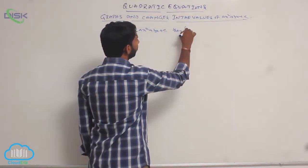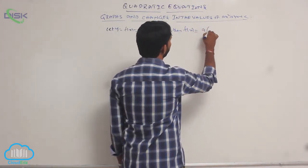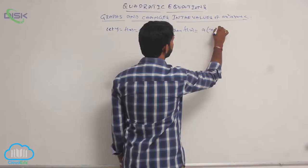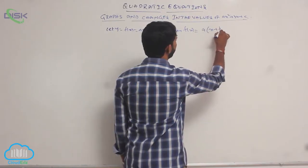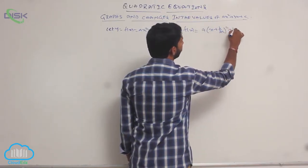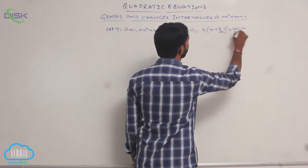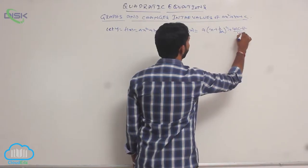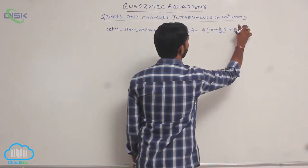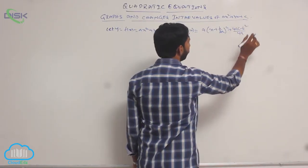Then f(x) = a(x + b/2a)² + (4ac − b²)/4a.